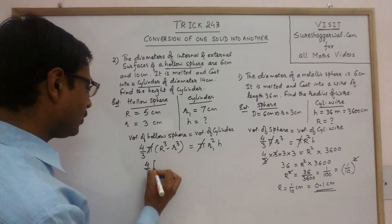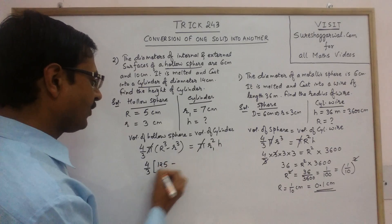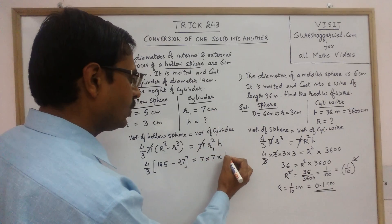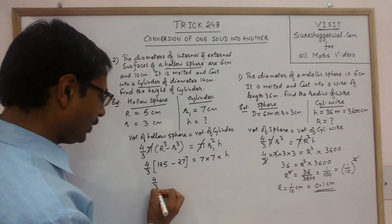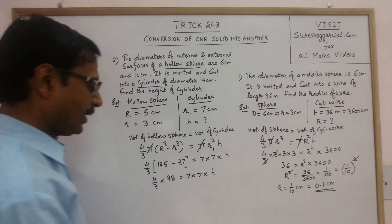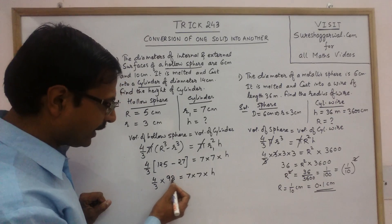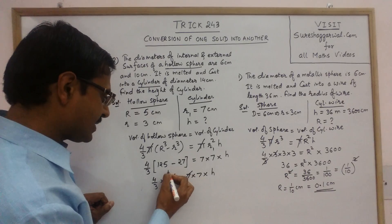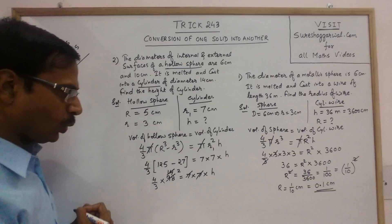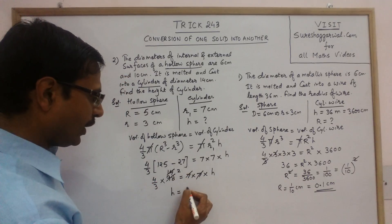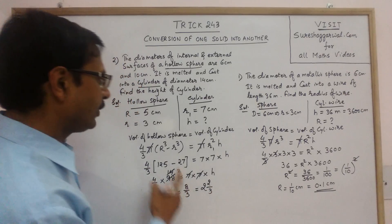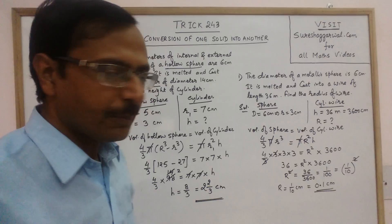Put the values: (4/3) × (5³ − 3³) = R1² × h. Here 5³ = 125 and 3³ = 27, and R1 = 7. So (4/3) × (125 − 27) = 7 × 7 × h, giving (4/3) × 98 = 49h. Cancelling 7 from 98 gives 14, then cancelling further: h = (4 × 2)/3 = 8/3 cm, or as a mixed fraction, 2⅔ cm. So the height of the cylinder is 8/3 centimeters.